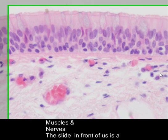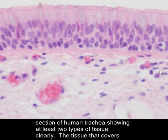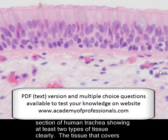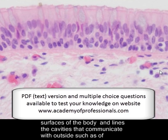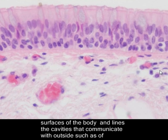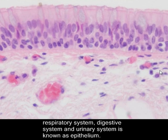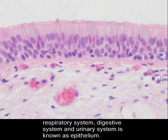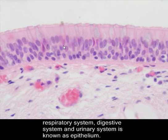The slide in front of us is a section of human trachea showing at least two types of tissues clearly. The tissue that covers surfaces of the body, such as skin, or lines the cavities that communicate with the outside, such as the respiratory system, digestive system, and urinary system, is known as epithelium.